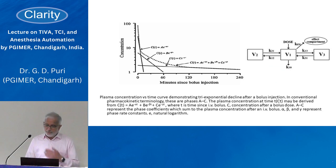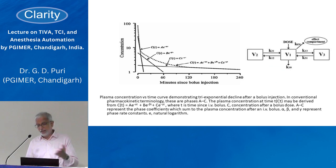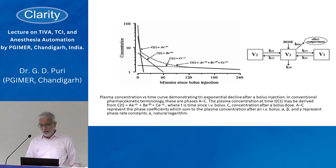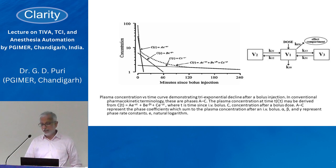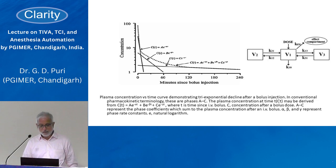So if we can find these constants in your patient or group of patients, we may be able to build a formula from which we can define: given this much drug, this rate of infusion will produce this concentration. When you give propofol, this is the predicted concentration curve.